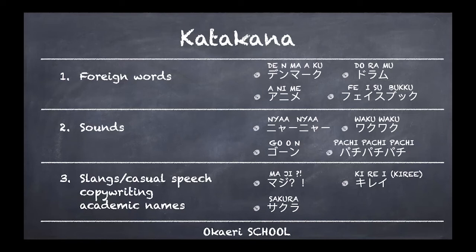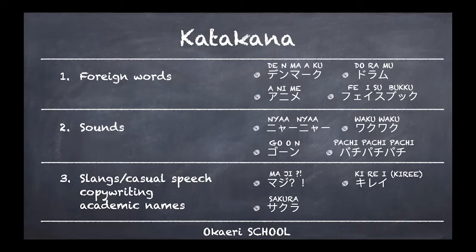Number two: sounds. For example, 'nya nya' is the sound of a cat — meow in Japanese. 'Waku waku' is the sound of an excited feeling, like a beating heart — when you're excited or looking forward to something you say waku waku. 'Gong' is the sound of a huge bell, like a chime in a church or temple. 'Pachi pachi pachi' is the sound of clapping. These onomatopoeic sounds are written in katakana.